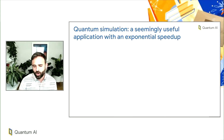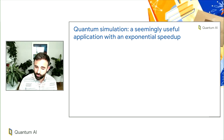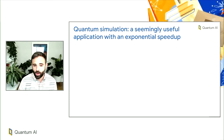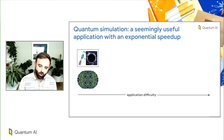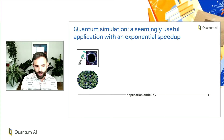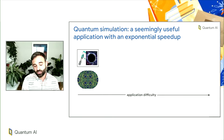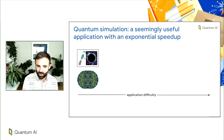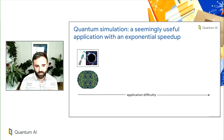So if quadratic speedups aren't promising, what is an application that is seemingly useful with a much larger — ideally exponential — speedup? The answer I'd like to talk about today is, of course, quantum simulation. When I talk about quantum simulation, I like to have in mind a spectrum of applications. On one side it's fairly easy to achieve quantum advantage, but perhaps not that useful yet. On the other side, there are potentially very useful things that are harder to execute.